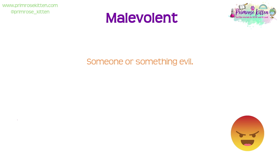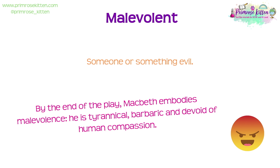Finally, number fifteen is the word malevolent. It simply means someone or something evil. There are lots of evil forces at play in Macbeth: we have the witches, Lady Macbeth and her manipulative ways, and certainly by the end, Macbeth, who is willing to kill Macduff's wife and children for seemingly no good reason. In a sentence: 'By the end of the play, Macbeth embodies malevolence — he is tyrannical, barbaric and devoid of human compassion.'